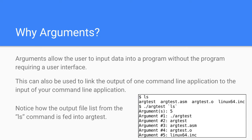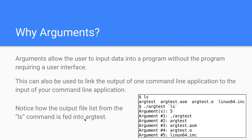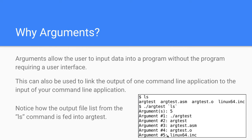This can also be used to link the output of one command line application to the input of your command line application. For example, the output file list from the ls command can be fed into argtest. If I type ls, it lists the files in the folder: argtest, argtest.asm, argtest.o, and linux64.inc. If I say dot slash argtest and pass the ls output, my arguments become that file list — arguments 5, with dot slash argtest as the first, then argtest.asm, argtest.o, and linux64.inc. So I can link the output of the ls command to the input of a program I write for the command line interface.